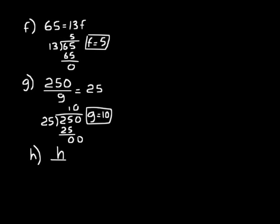Let's try one more: h over 16 equals 3. This time we're figuring out our dividend. 16 goes into what three times? Our quotient is 3, so we multiply 16 times 3, which gives us our dividend: 16 times 3 equals 48. So 16 goes into 48 three times, and h equals 48. When you don't know the dividend, multiply the quotient times the divisor — that gives you the dividend. That's another way multiplication and division are related. That's all for lesson 4.